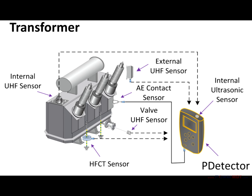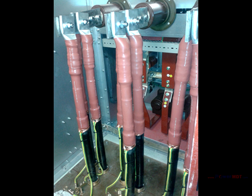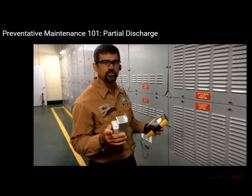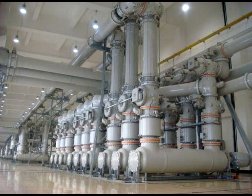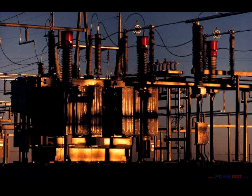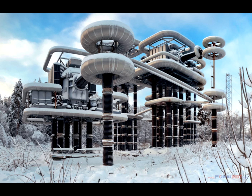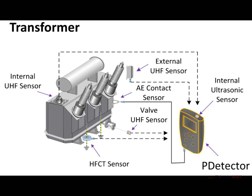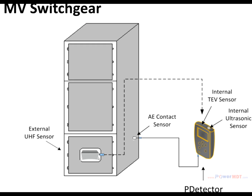In addition to power transformer diagnostics, the online PD detection kit can be applied to power cables and their terminations and splices, medium voltage switchgear, SF6 circuit breakers, GIS, instrument transformers, bushings, overhead insulators — virtually any type of substation apparatus energized above 3 kV. No matter which device you're testing, you'll be able to use at least three sensors to get a complete picture of the insulation condition.